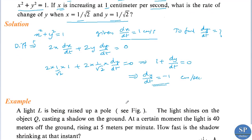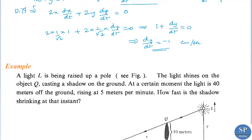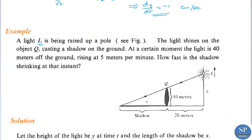Next, another example. A light L is being raised up a pole. The light shines on the object Q. This is the light shining on the object, casting a shadow on the ground. So we have the shadow of this object created by this light.